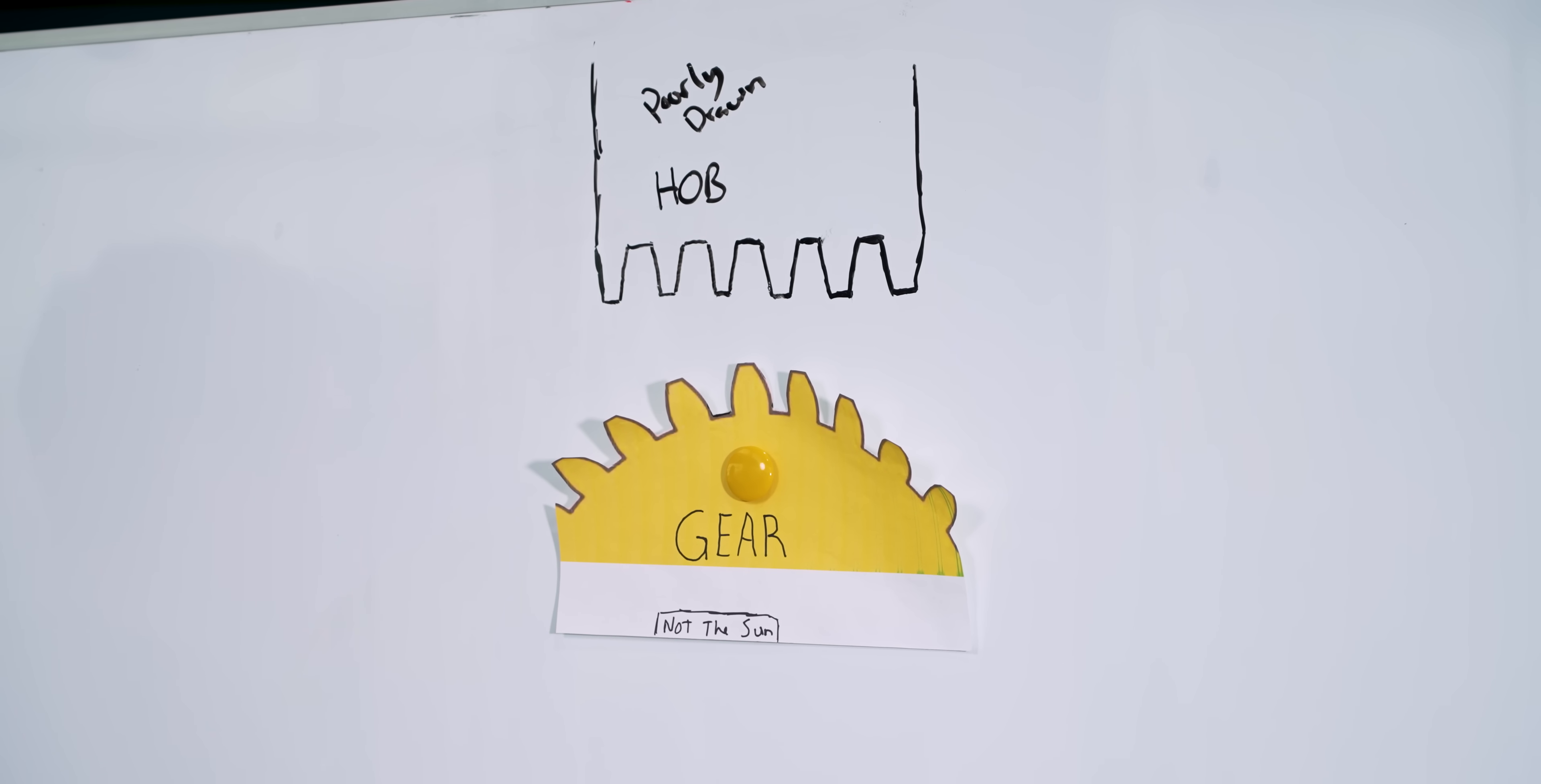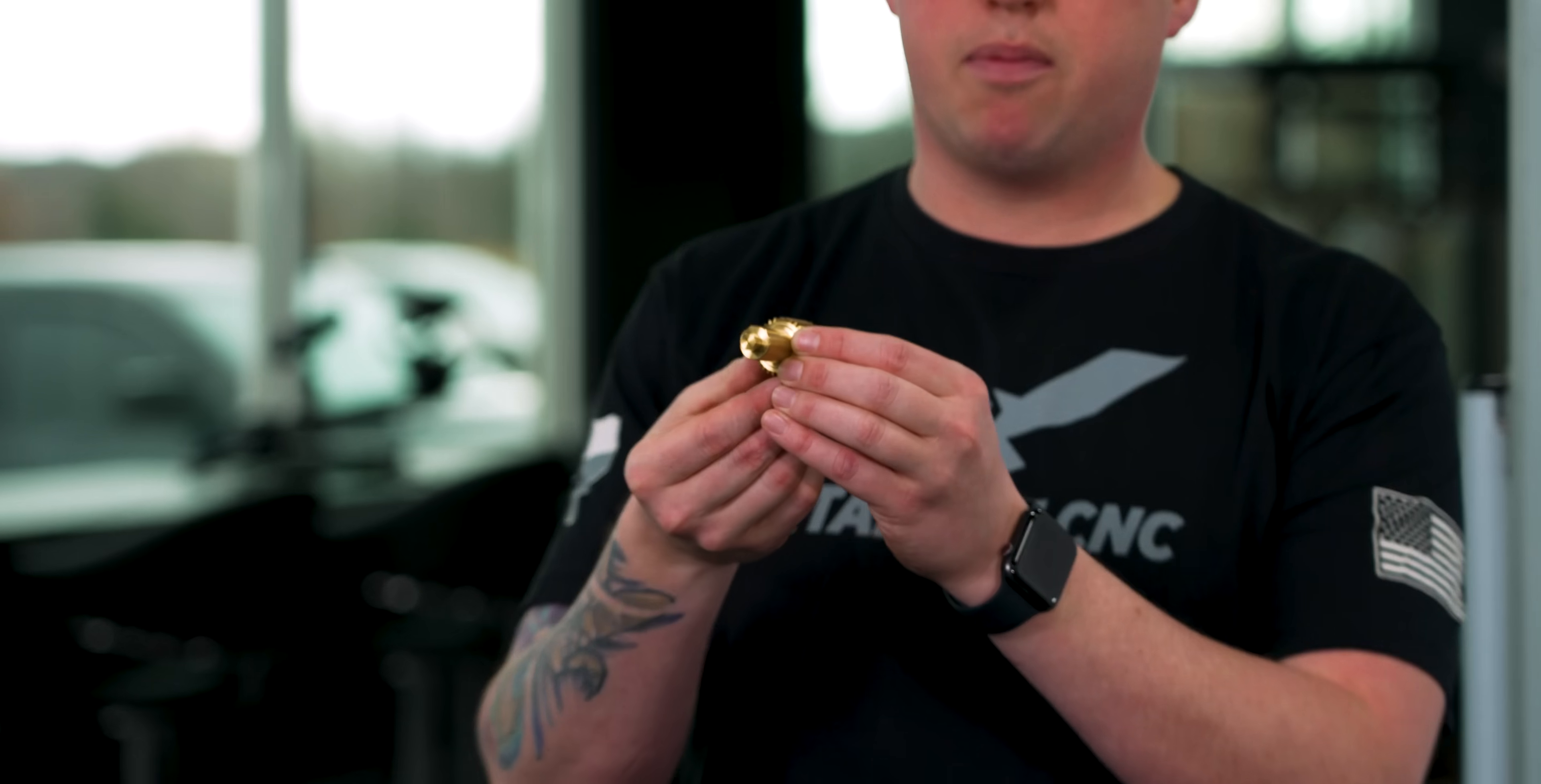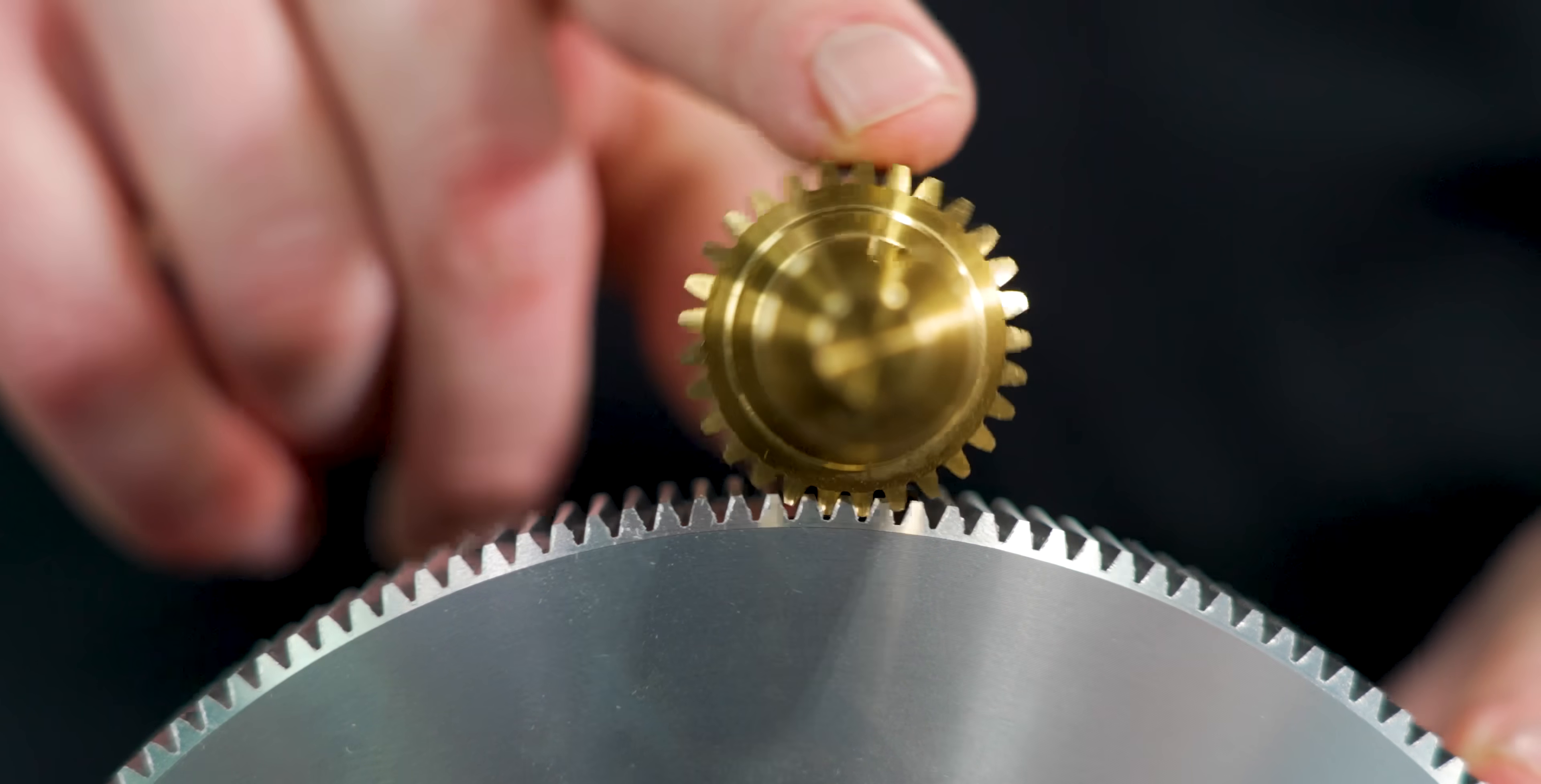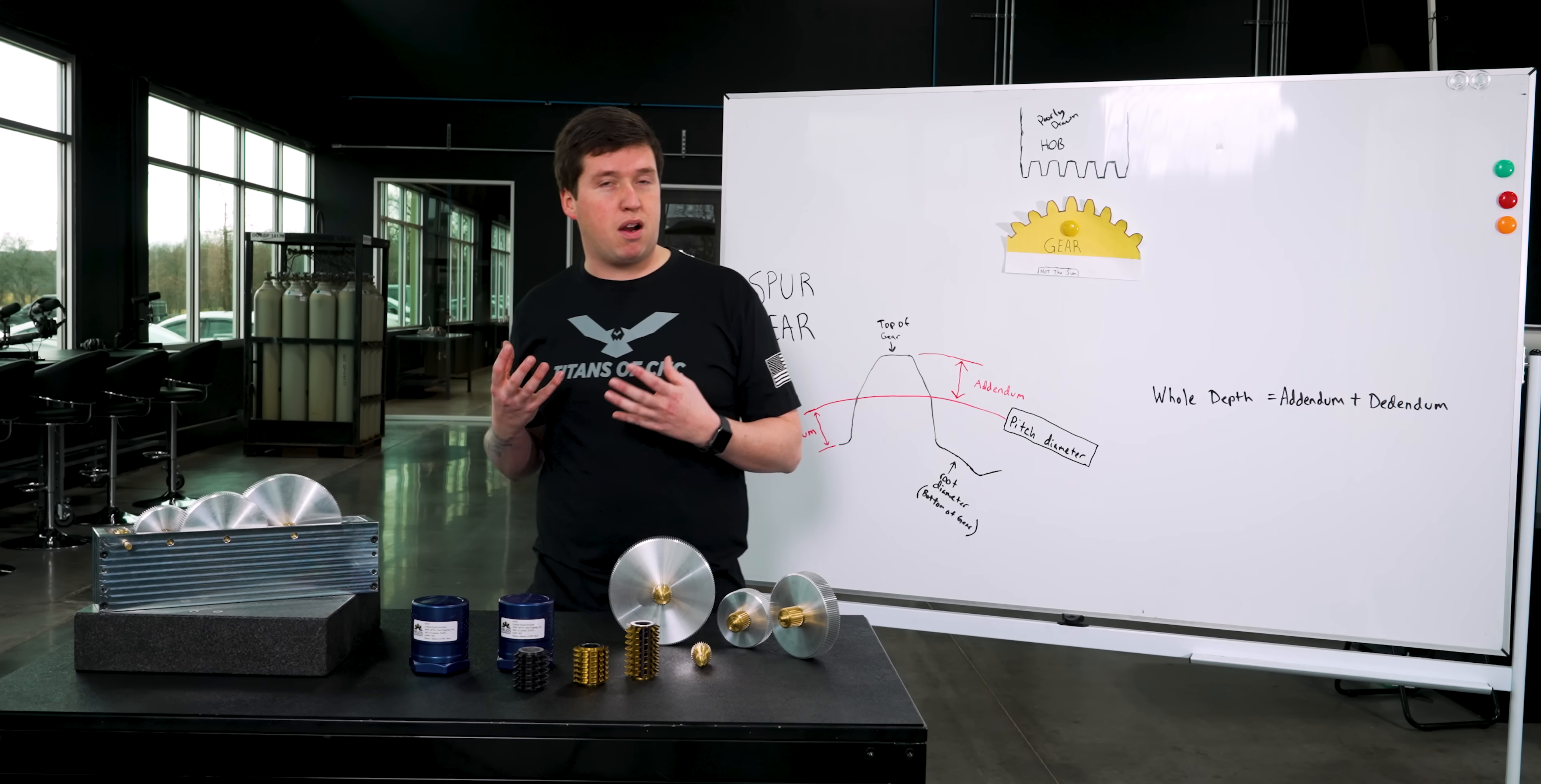This is also what your hob is going to look like. Now, obviously in order to make a gear, we can't have something 200 feet long to roll through our parts. So that's why we make our hobs round and helical so we can spin the hob and the gear to create the form of our gear. So other than that, all you need to know for your gear is your whole depth. Your whole depth is just going to be your addendum plus your dedendum. So it's basically from the bottom of the gear, the root of your gear to the top of the gear.